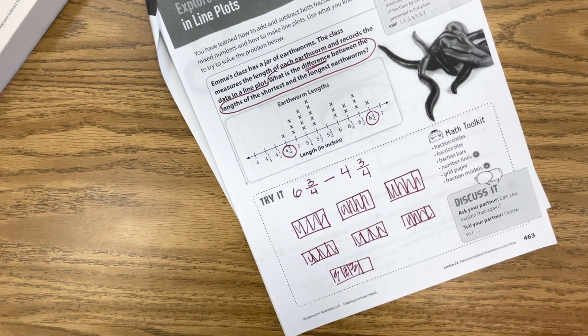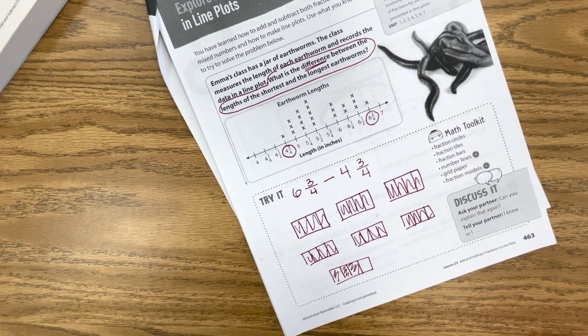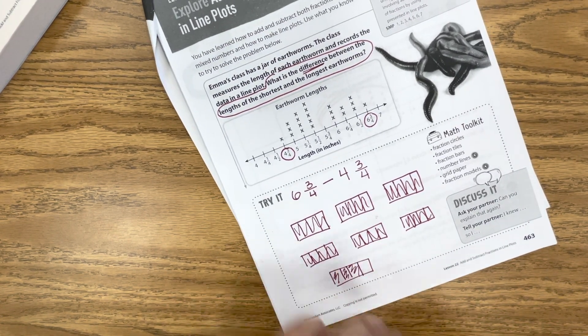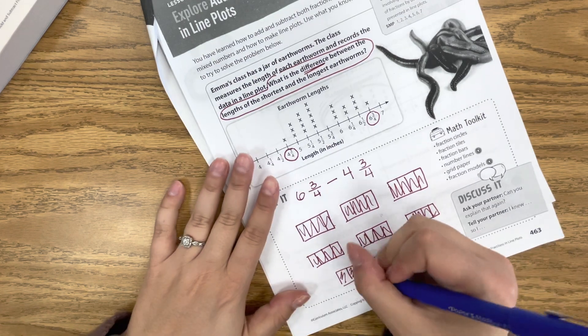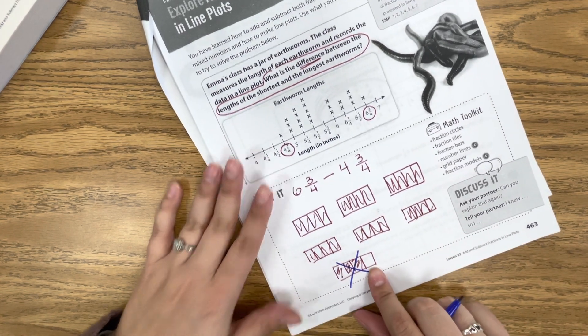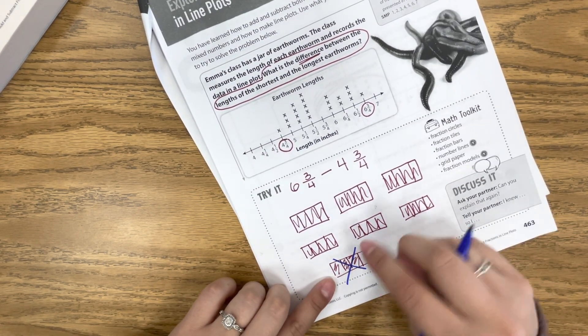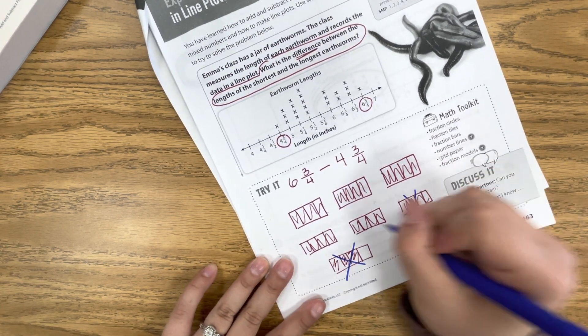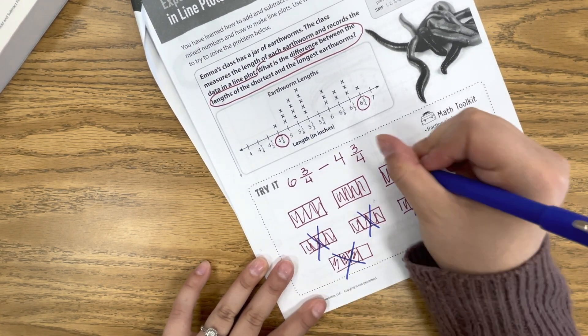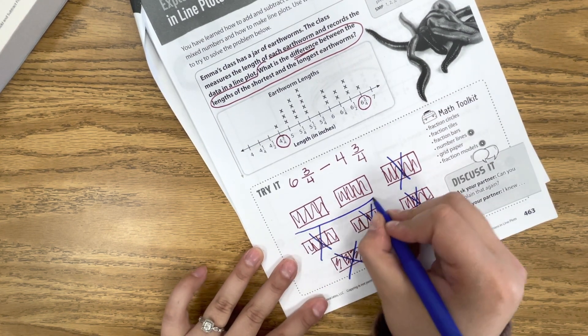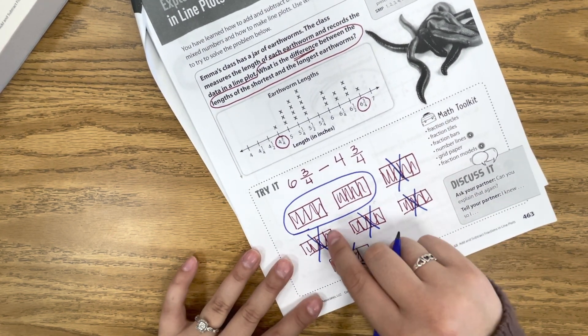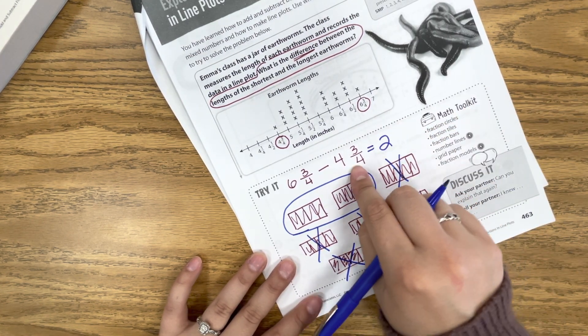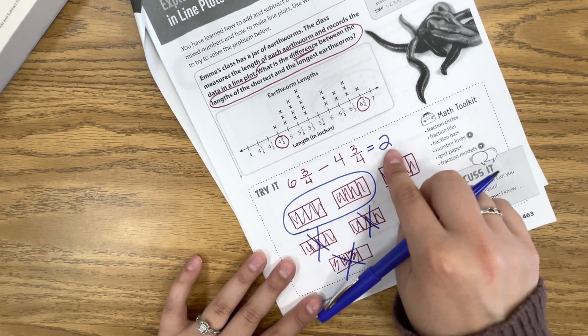So we have 6¾. So let me just grab a different color. We'll do blue. So we have 6¾, and now we have to take away 4¾. So easy is first taking away this, because we have 3 out of 4ths here as well. So we took away our ¾ already, and now we have to take away 4 whole ones. So we have 1, 2, 3, 4, meaning this is our leftover. So we could say 2, because the ¾ths cancel out, so 6 minus 4 is 2.